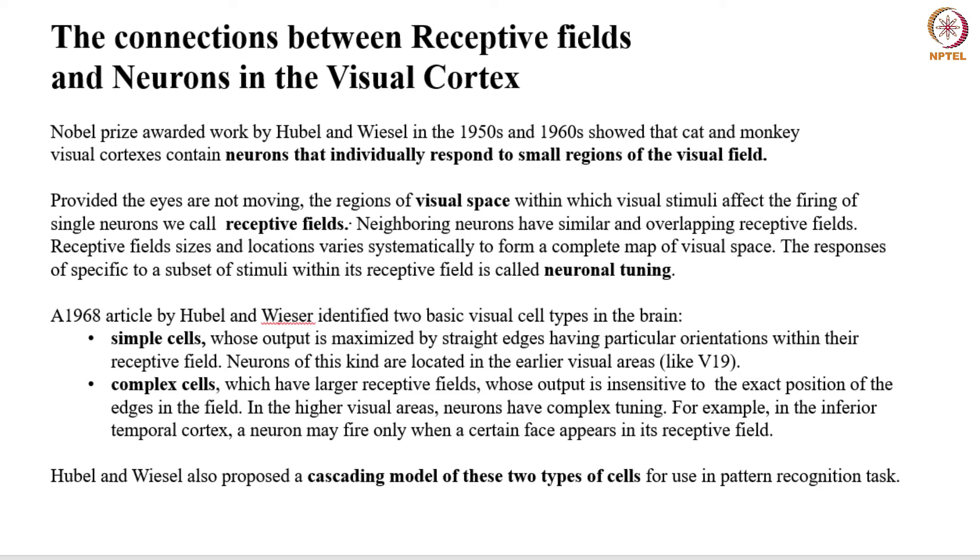So what they say is that provided the eyes are not moving, the regions of visual space within which visual stimuli affect the firing of single neurons, we call these subfields receptive fields. So there is a coupling according to them from certain receptive fields, small subfields, onto specific neurons. And neighboring neurons have similar and overlapping receptive fields. So you can say there is a small army of neurons that look at the receptive fields, different parts from different angles.